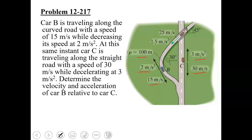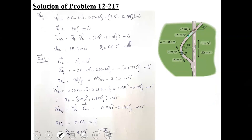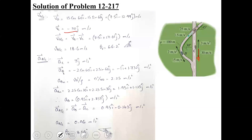We need to find the velocity and acceleration of car B relative to car C. Using a conventional x-y coordinate system, starting with relative velocity: car C is moving at 30 meters per second directed along the negative y-axis, so vC becomes minus 30j. For car B at 15 meters per second, this angle is 30 degrees, making the remaining angle 60 degrees, which we use to resolve the velocity along the x and y axes.